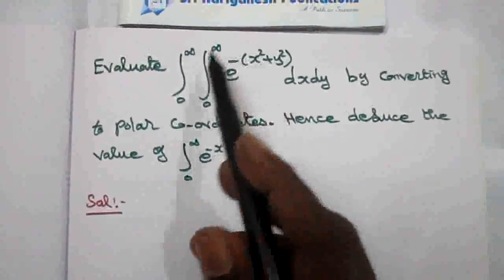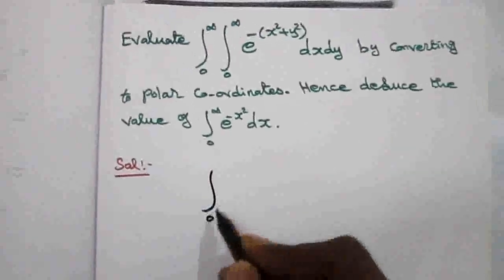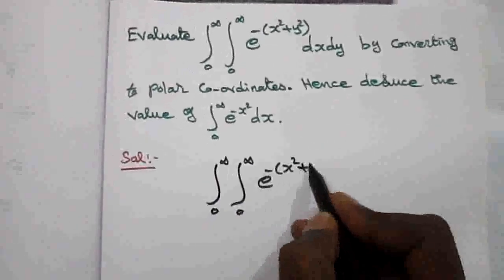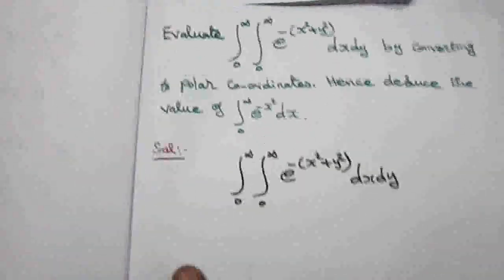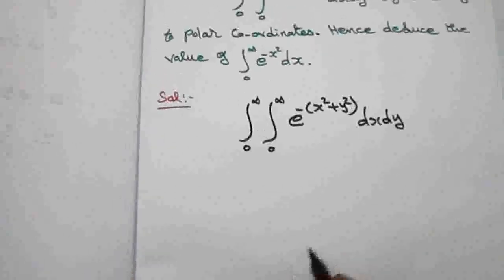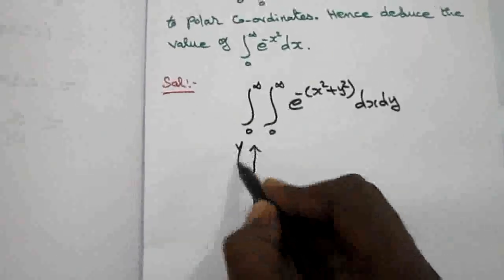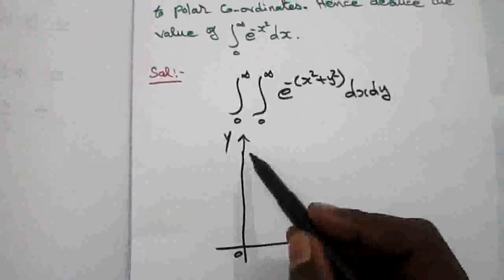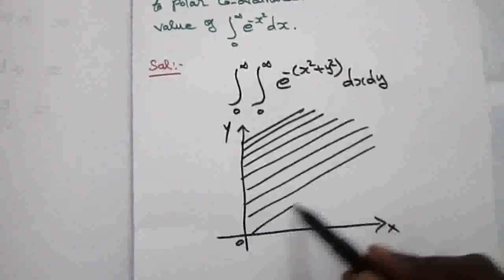So now we evaluate this integral by converting to polar coordinates. The given integral is the double integral from 0 to infinity, 0 to infinity, of e to the power minus (x squared plus y squared) dx dy. The given limits are x: 0 to infinity, y: 0 to infinity, so it covers the entire region in the first quadrant.